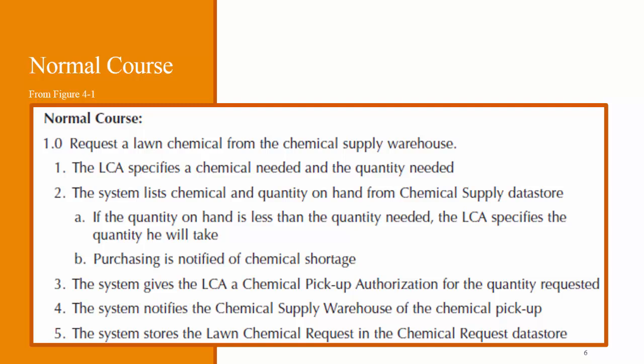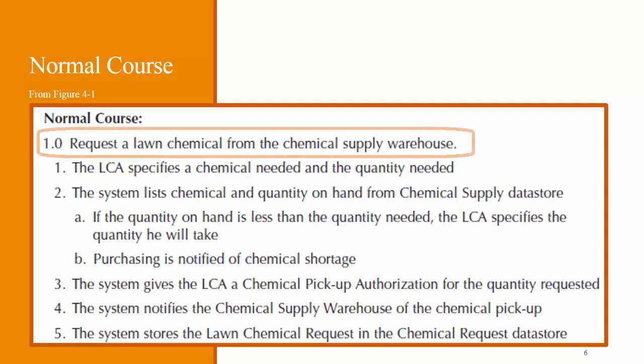The examples in the textbook include a line at the beginning of the normal course marked 1.0. The information on this line is essentially the same as the title of the use case. The reason they include this is in case they also want to include several alternative courses of action in addition to the normal course. These are numbered 1.1, 1.2, and so forth. You can see examples in the textbook if you're interested. For the purposes of this course and project, you don't have to include that line.